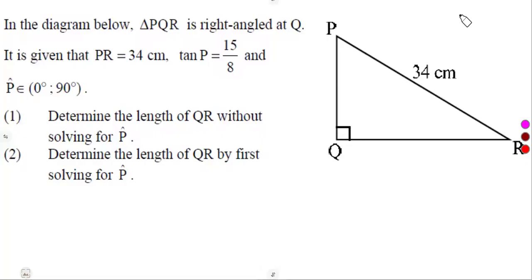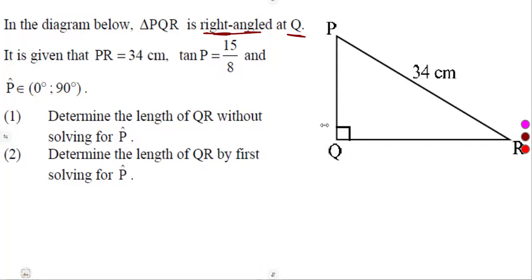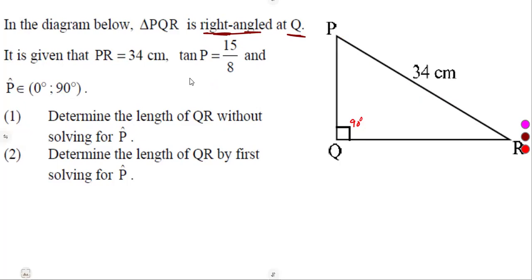We are going to consider a question given in the diagram below. Triangle PQR is right-angled at Q, meaning we are working with a right-angled triangle where angle Q is 90 degrees. It is given that PR is 34 centimeters, and the tan of angle P is 15 over 8, where angle P is an element of 0 to 90 degrees.